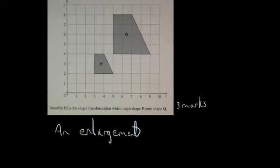And then the next thing you need to do is describe the scale factor of an enlargement. So this one, P's got a height of 2 and Q's got a height of 4. P's got a width at the bottom of 2, Q's got a width at the bottom of 4. And finally P's got a width at the top of 1, Q's got a width of 2 at the top.